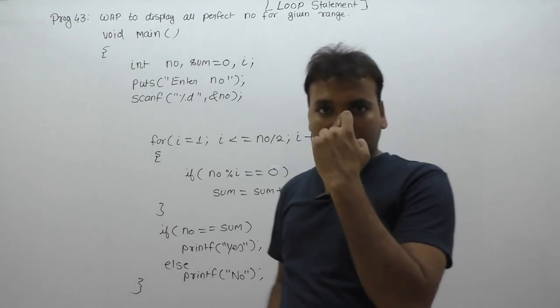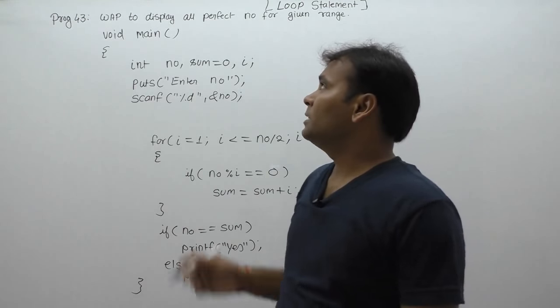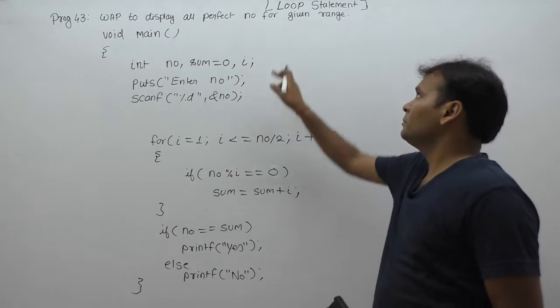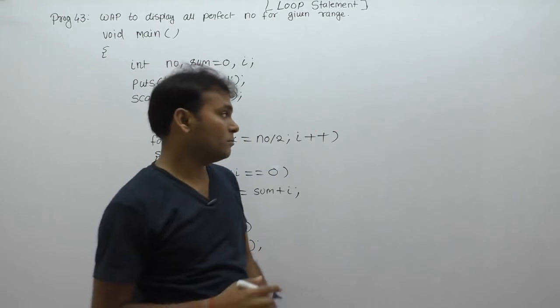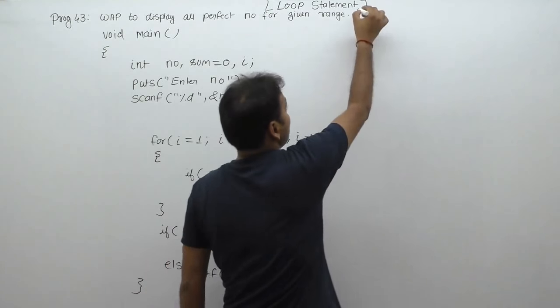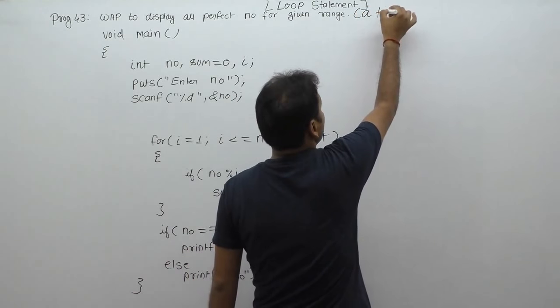Now another C program with respect to perfect numbers. Write a C program to display all perfect numbers for a given range. Given range means from minimum to maximum range, or from A to B.